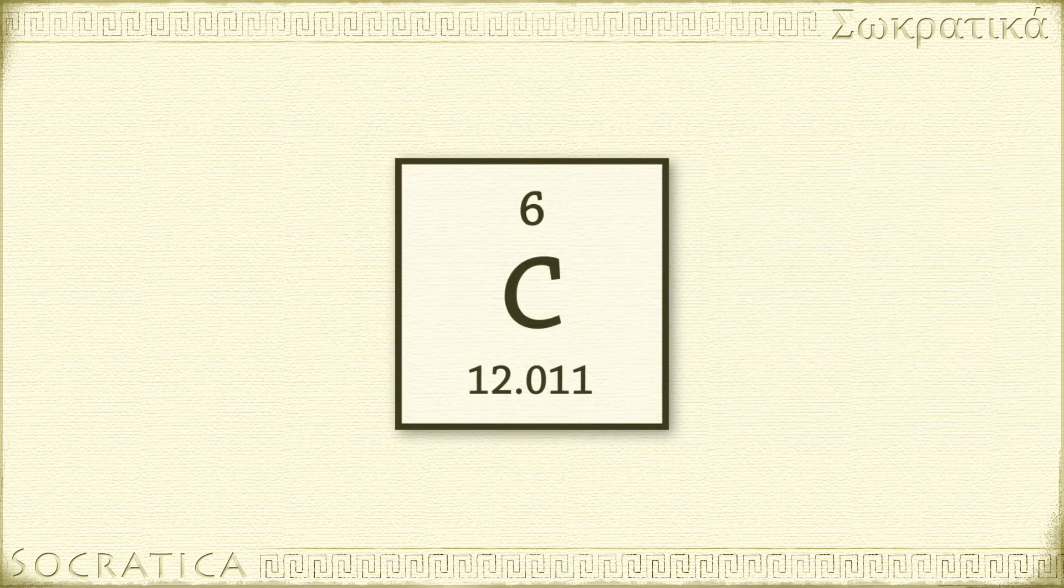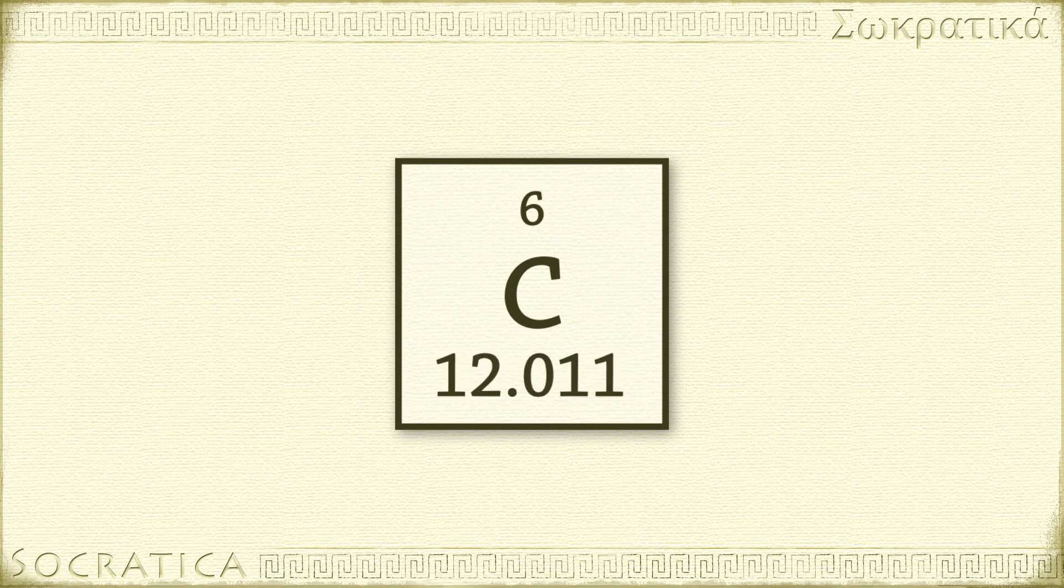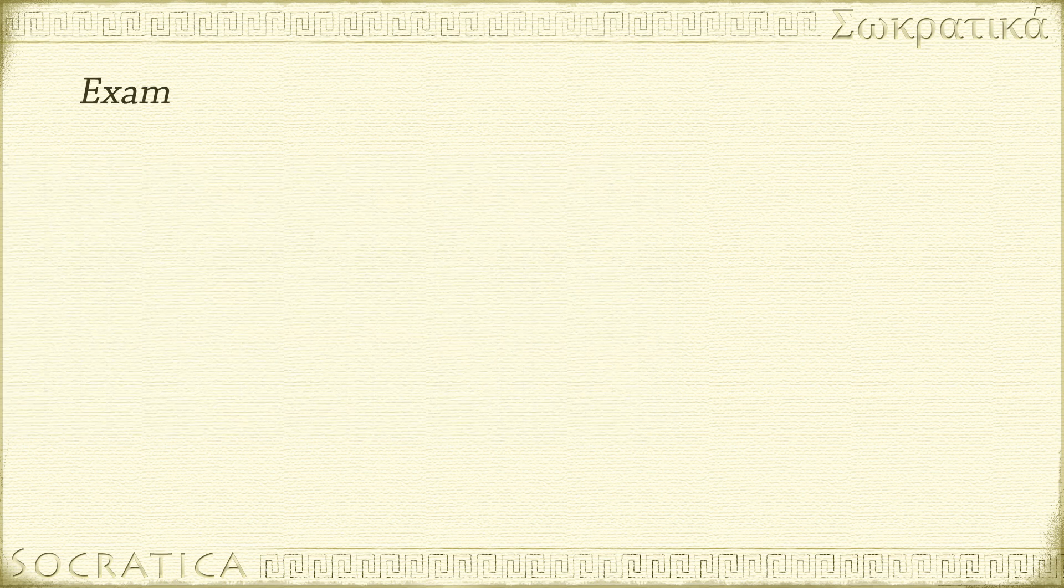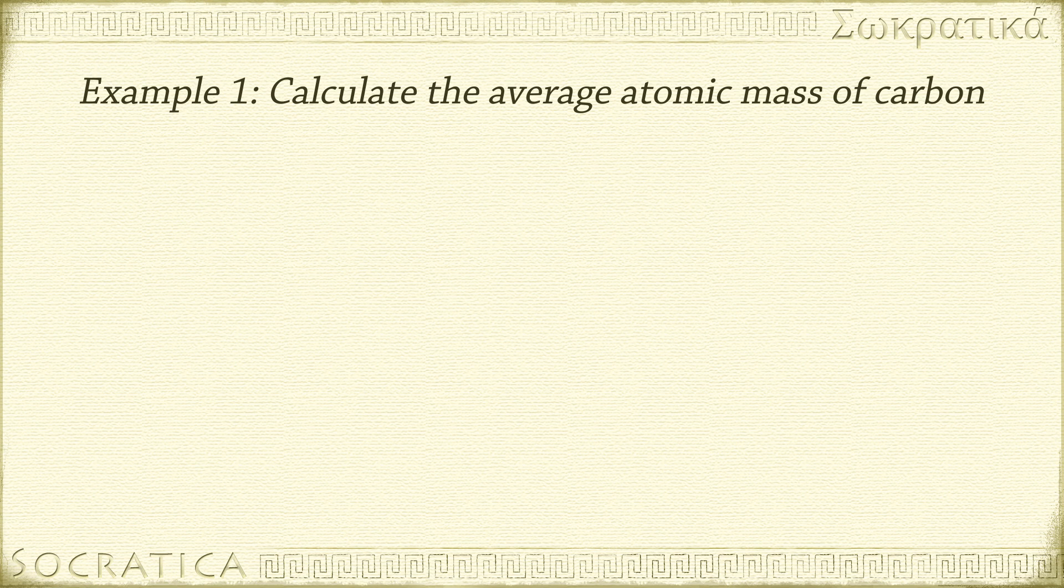So why, when you look at the periodic table, does it not say exactly 12 for carbon's atomic mass? Because there is more than one kind of carbon. Remember, chemists assigned carbon-12 the mass of 12 u, but there are other isotopes of carbon.